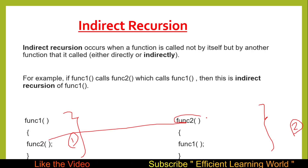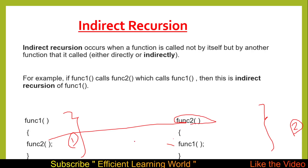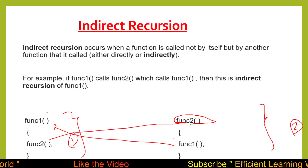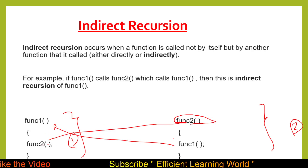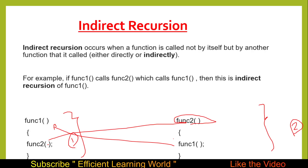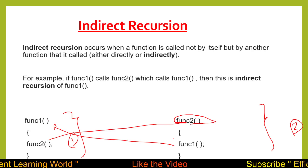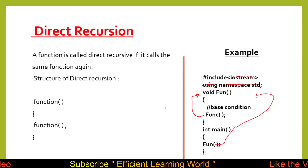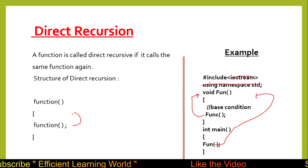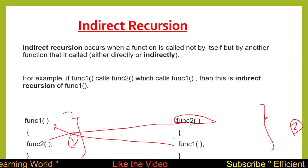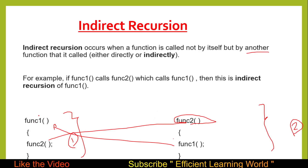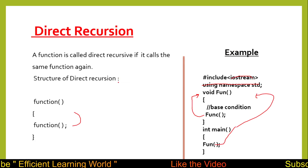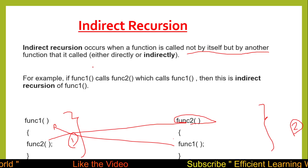In the body of function one we are calling function two, and when function two is executed it calls function one again. So one function calls another function, and that function calls the first one back, continuing until the base condition becomes false. The key difference: in direct recursion a function calls itself, but in indirect recursion a function is called not by itself but by another function.